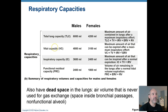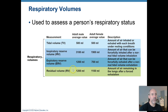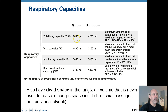Vital capacity is the maximum amount of air you can move in and out of your lungs — breathing with a maximum inhale followed by a maximum exhale. It includes tidal volume, inspiratory reserve volume, and expiratory reserve volume. The only component excluded is residual volume. So for males: 6,000 minus 1,200 gives you the vital capacity; for females: 4,200 minus 1,100.